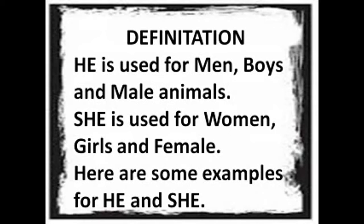Definition: He is used for men, boys, and male animals. She is used for women, girls, and female animals. Here are some examples for he and she.